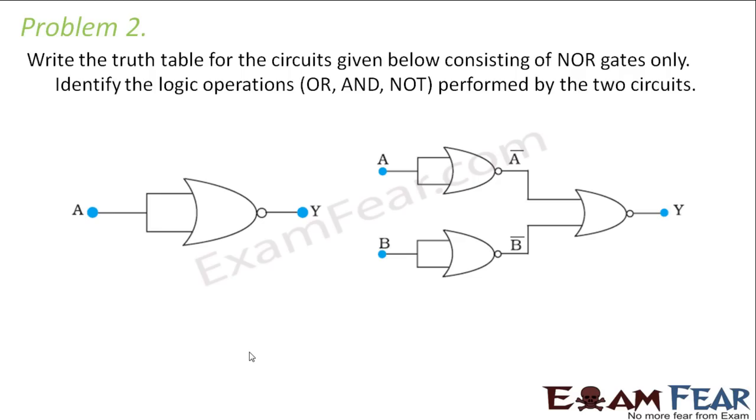It says write the truth table for the circuits given below consisting of NOR gates and identify the logic operations. So for the first one if you see the output Y will be nothing but A bar. So which logic operation is it performing? It is a NOT gate and the truth table would be 0, 1, 1, 0.